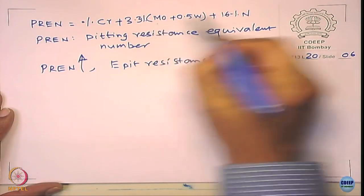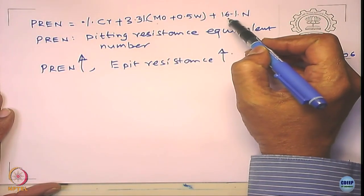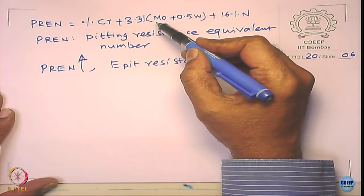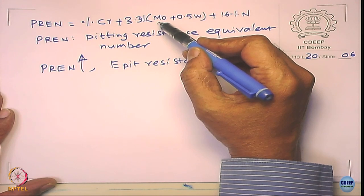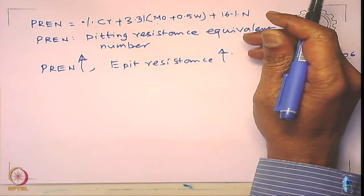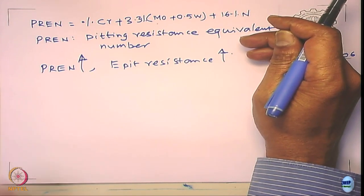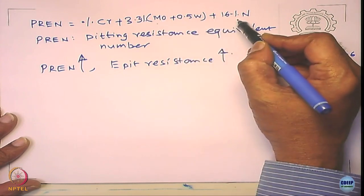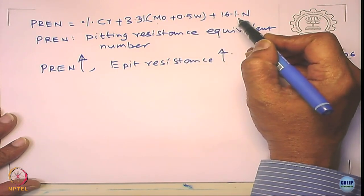Pitting corrosion has also been widely studied from a mechanistic point of view. Molybdenum and nitrogen are much more effective compared to chromium. People have studied why molybdenum is very effective — there are multiple theories. One hypothesis: molybdenum is not found in the passive film but is found in actively corroding areas, and it blocks active surfaces.